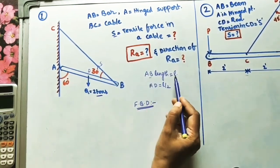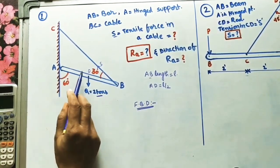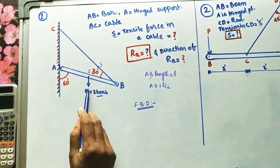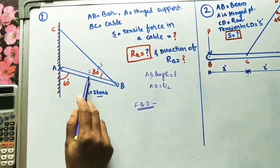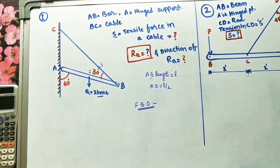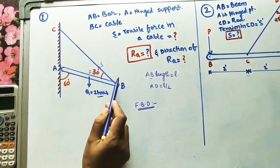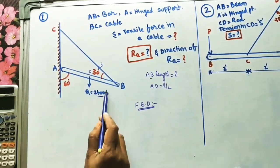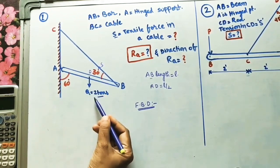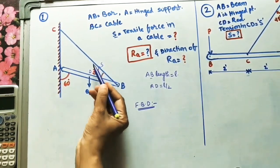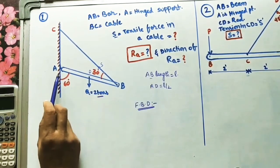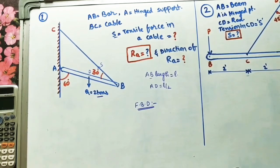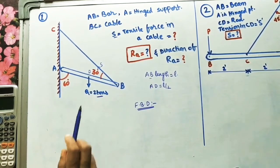At point D, at the middle of the bar — bar length is L — a Q force is acting. AD length is half of the bar, L by 2. We have to find the tension in this cable due to the application of this load, which is acting in a downward direction. We also need to find the reaction RA at the hinged support.